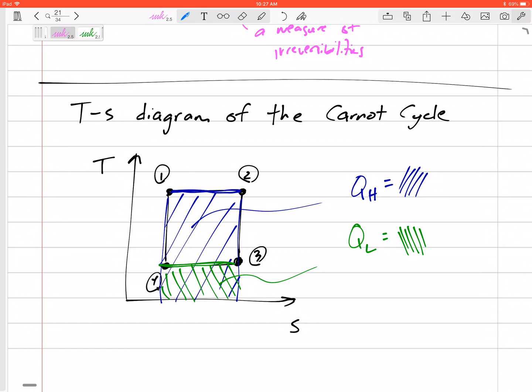And the difference in the two would be the work. Work would be QH minus QL, which is this pink area on the chart. So that's what a Carnot cycle looks like on the TS diagram.